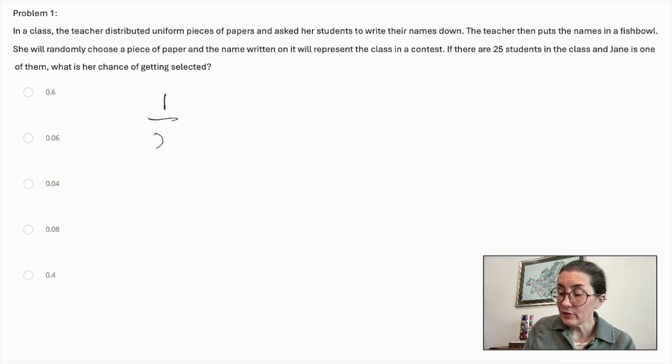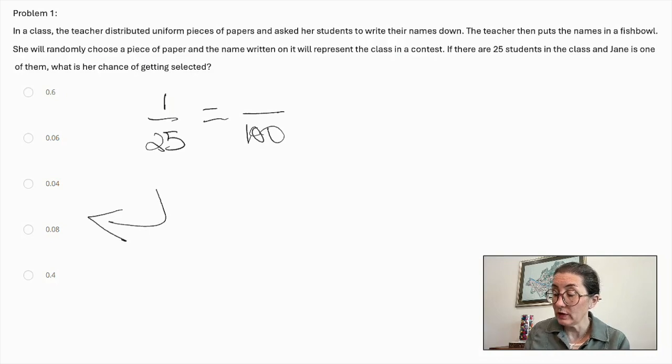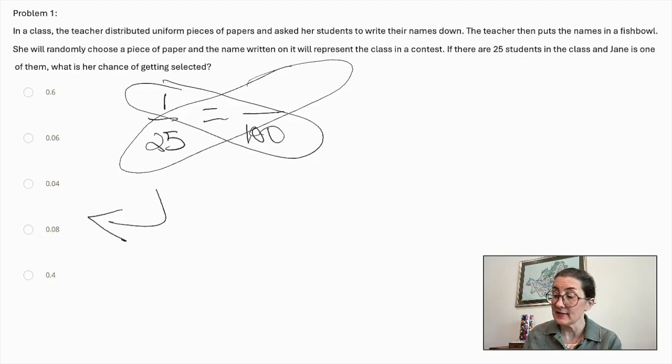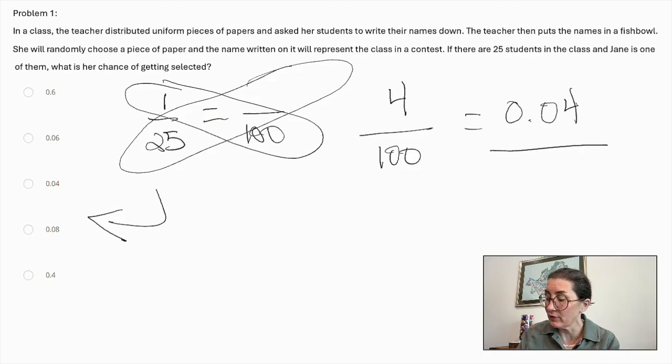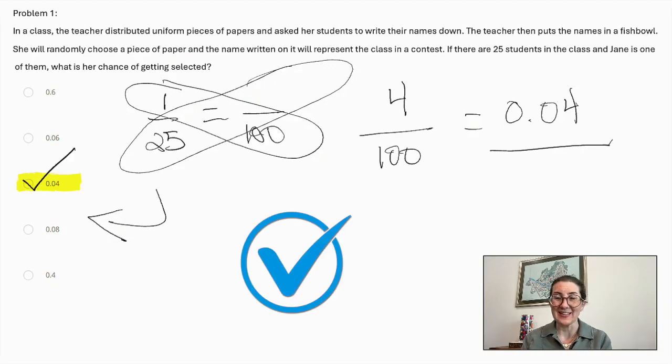Jane is 1 of 25. We need to put it over 100 in order to transform it into a decimal. So 1 times 100 is 100. 25 times what is 100? That is 4. So 4 over 100, which is equal to 4 hundredths. That's how we can say it. And 4 hundredths looks like this in decimal form. So this is our correct answer.